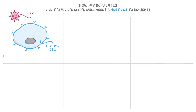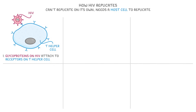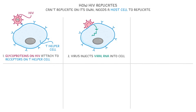First, once an HIV virus particle has made it into the body, the glycoproteins on HIV attach to receptors on a T helper cell. After it's attached, the virus injects its viral RNA into the cell, so this viral RNA leaves the virus and enters the host cell's cytoplasm.